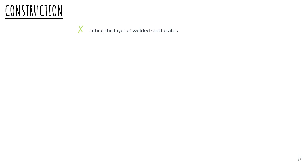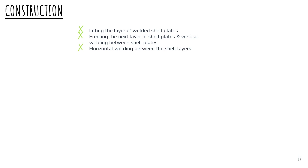Once one layer is completed, it will be lifted using hydraulic jacks. The number of hydraulic jacks will be determined based on the total weight of the shell plates and the load bearing capacity of each hydraulic jack. Then the next layer of shell plates will be erected and vertical welding between shell plates will be carried out. After the vertical welding between plates in the same layer gets completed, horizontal welding between the adjacent shell layers will be done.